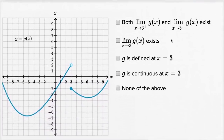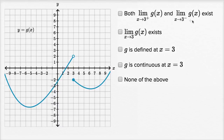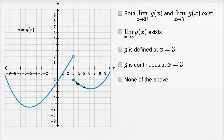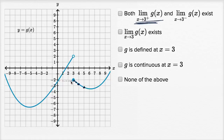Let's do another one. The first statement says both the right-hand and left-hand limits exist as x approaches three, where we have a jump discontinuity. Approaching from values larger than three: g of five is a little more negative than negative three, g of four is between negative two and negative three, g of 3.5 is closer to negative two, g of 3.1 is even closer to negative two, and g of 3.01 is even closer to negative two. So it looks like the right-hand limit exists and equals negative two.